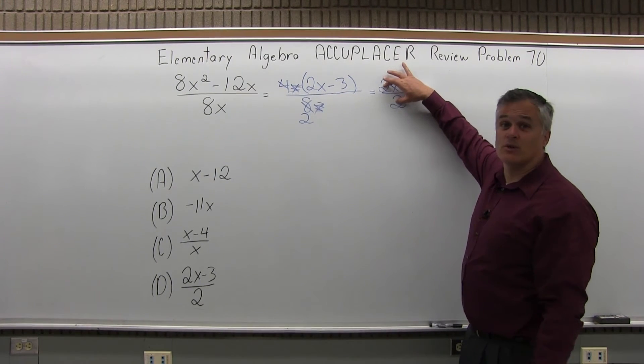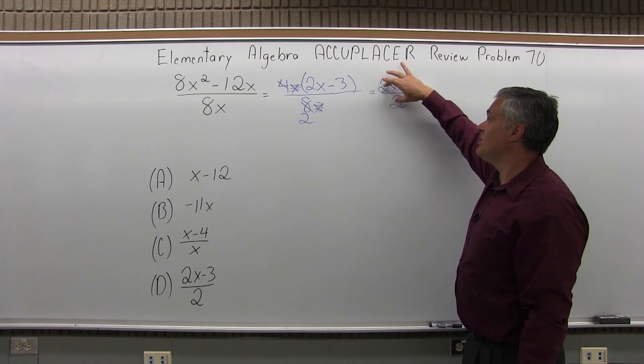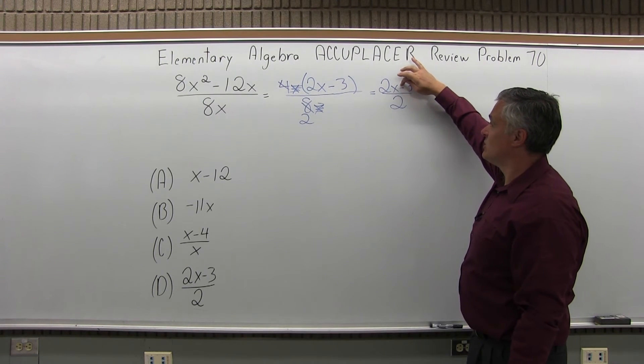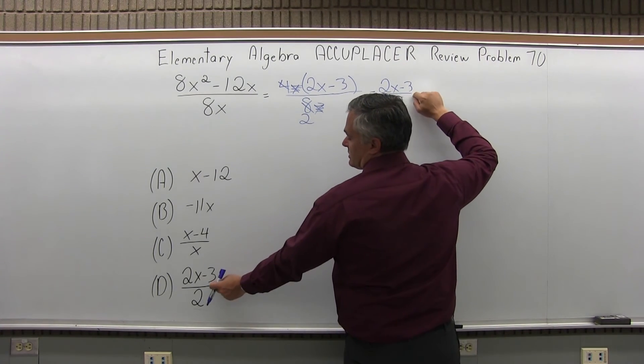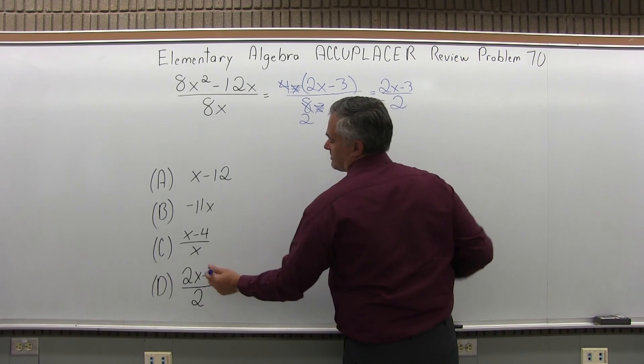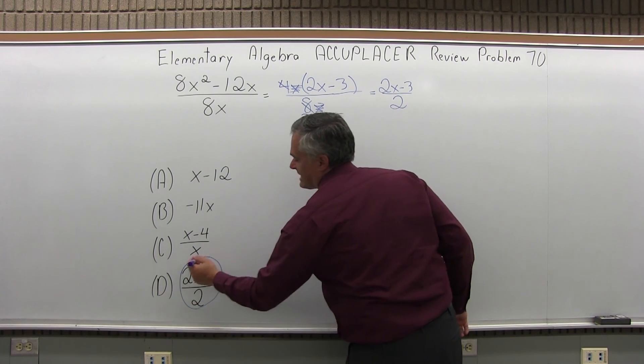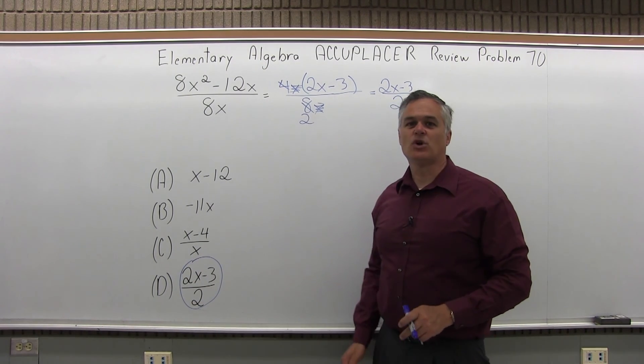You might think you can reduce it further - 2 in the top, 2 in the bottom. You can't, because it's not multiplication, it's addition or subtraction. That's as far as it goes. Looking at 2x minus 3 over 2, my answer matches option D exactly. So the answer for problem 70 is option D.